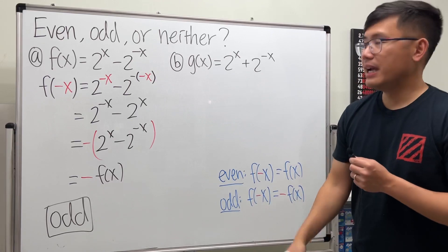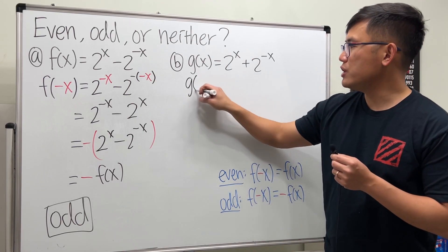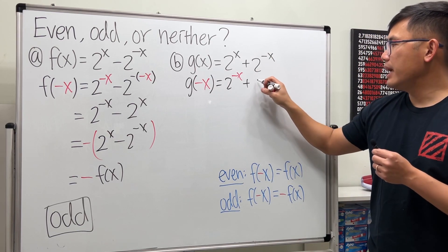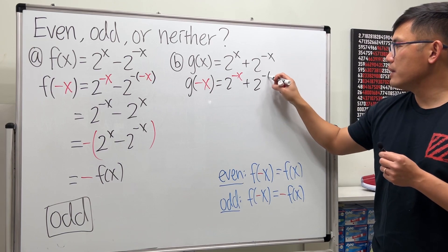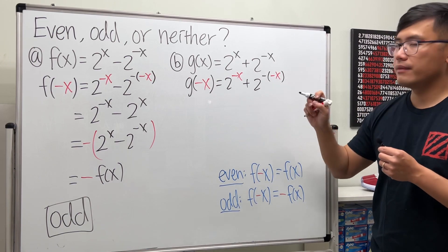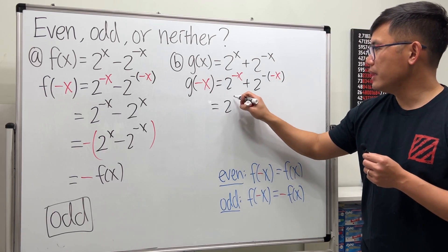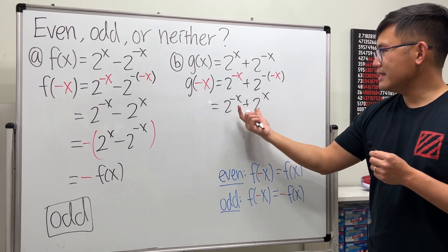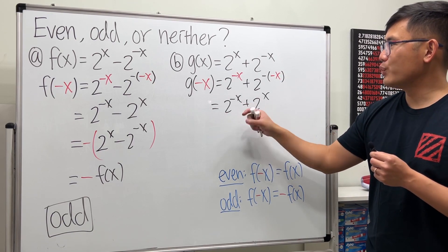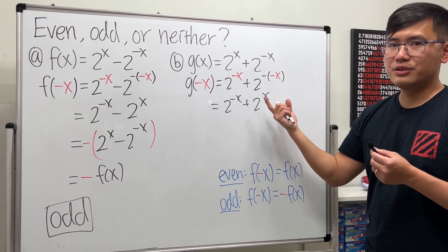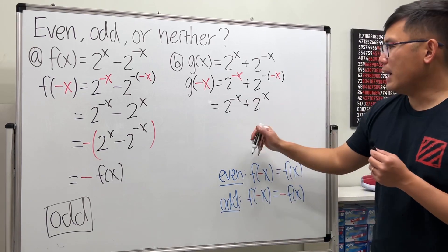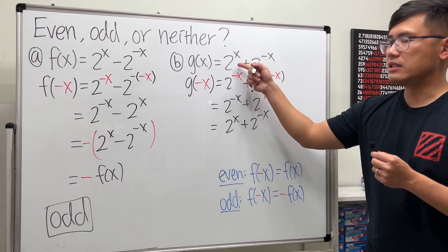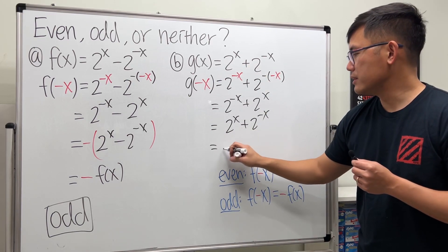Now for this one, we plug negative x into g. So g of negative x is 2 to the negative x plus 2 to the negative of negative x. Working this out, this is just 2 to the negative x plus 2 to the x. This is just a different order from the original, and since it's addition, the order doesn't matter — we can switch back to get 2 to the x plus 2 to the negative x, which is the same as the original.